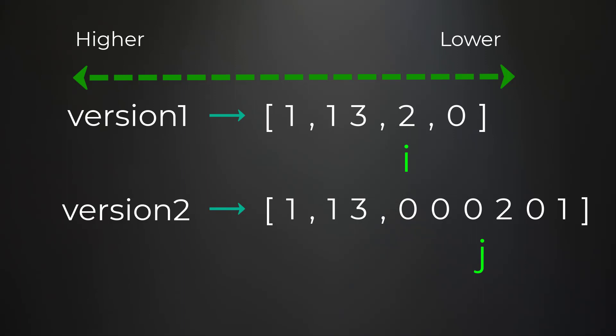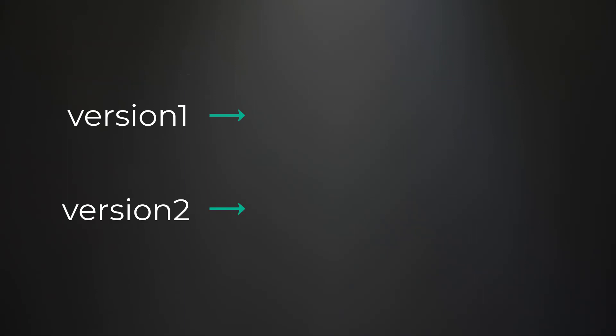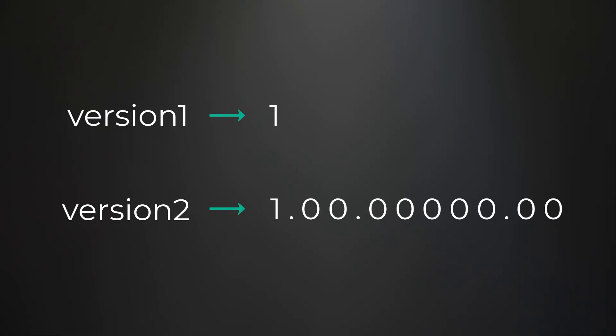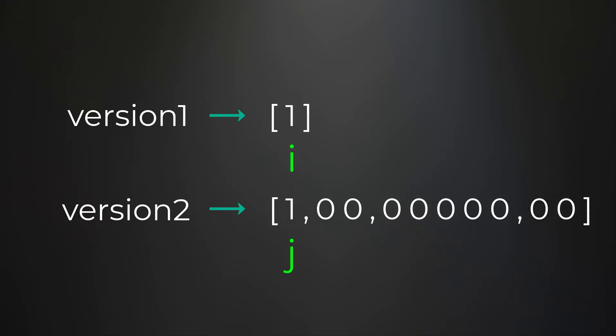Let's go over one more example, but this time one of the version strings has no periods. Version one is '1' and version two is '1.00' followed by more zeros — so version two has all zeros from revision one onward, making it technically equal to one. Let's run through the algorithm starting our pointers at index zero.